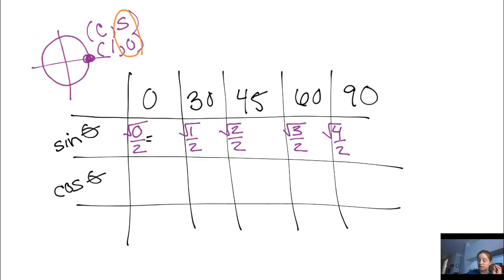Square root of 0 is 0. 0 divided by 2 is 0. Square root of 1 is 1, which is 1 half. Square root of 2, it's not an easy number, so it's square root of 2 over 2. Square root of 3, again, I don't know that off the top of my head, so it's square root of 3 over 2. Square root of 4 is 2. 2 over 2 is 1.